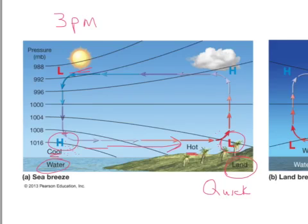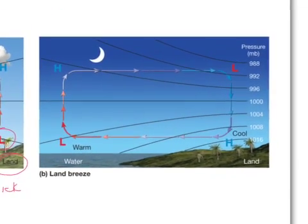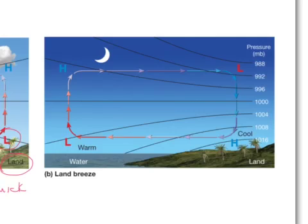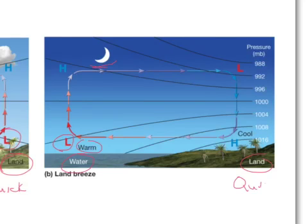Now let's look at what happens when things cool off at night. Water is stubborn to heat up and stubborn to cool down, so even though it's nighttime and surface temperatures are cooling, the water retains its heat — making it relatively warm, which creates a low pressure. Land tends to cool more quickly, so it's relatively cool compared to the large body of water, and cooler temperatures bring high pressure. So now we have an outgoing breeze — our land breeze.